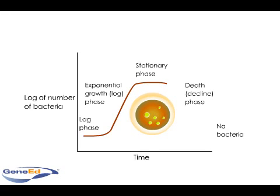the nutrients are used up, and waste products from the bacteria build up in the environment. The loss of nutrients and buildup of waste products can cause the environmental pH or temperature to shift, which in turn makes the environment a less optimal growth area for the bacteria.